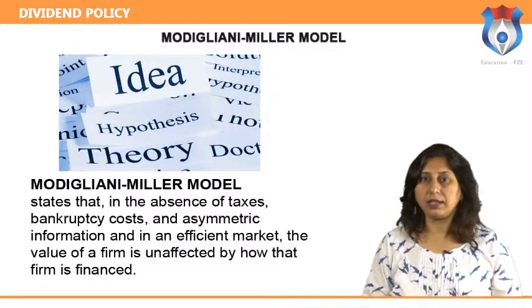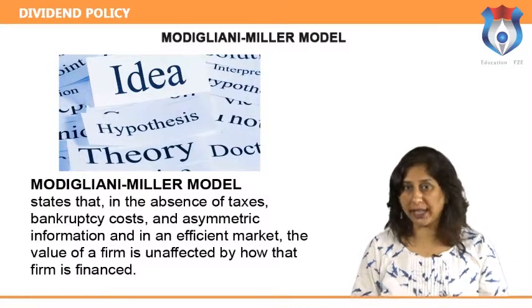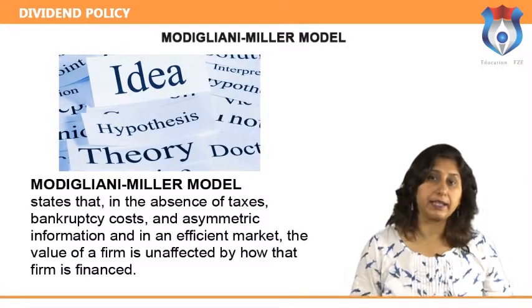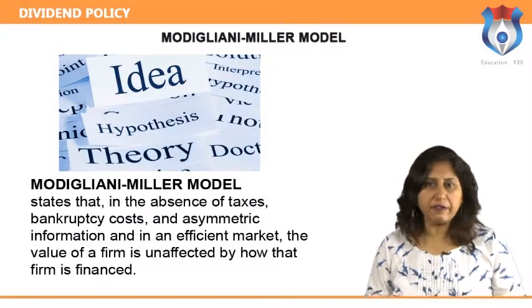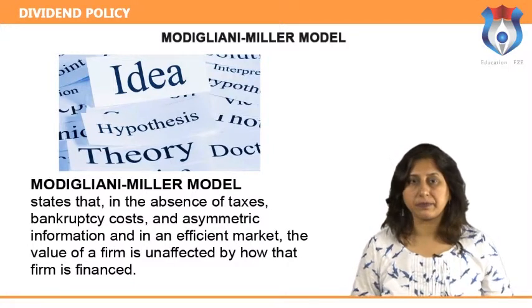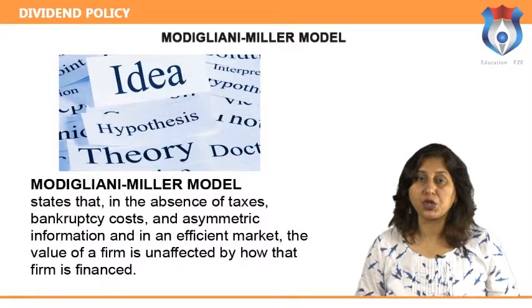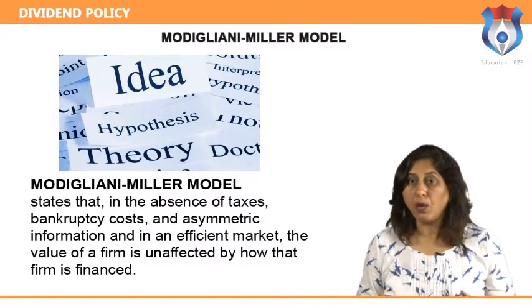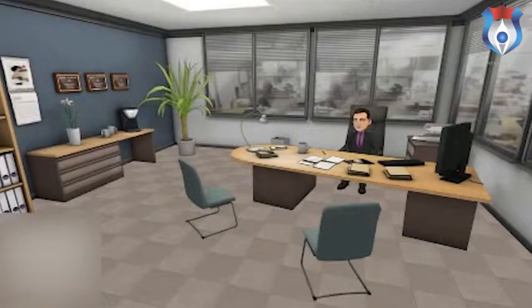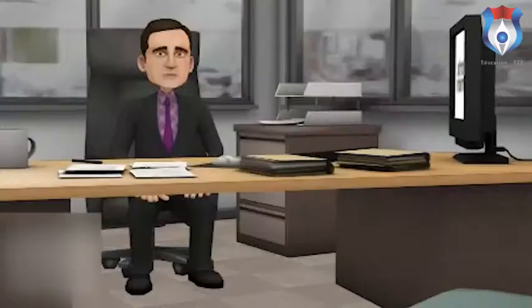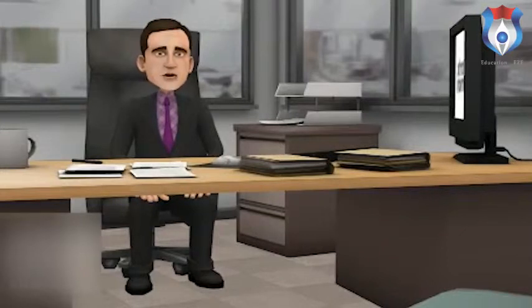Modigliani-Miller model. The Modigliani-Miller theorem forms the basis for modern thinking on capital structure. The basic theorem states that in the absence of taxes, bankruptcy costs, and asymmetric information, and in an efficient market, the value of a firm is unaffected by how that firm is financed. It does not matter if the firm's capital is raised by issuing stock or selling debt, and it does not matter what the firm's dividend policy is. The theorem states that the market value of a firm is determined by its earning power and the risk of its underlying assets, independent of how it finances its investments or distributes dividends. A firm can choose between three methods: issuing shares, borrowing, or spending profits.